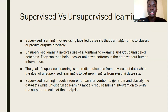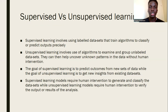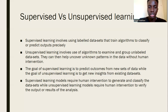Unsupervised learning, on the other hand, involves the machine teaching itself — uncovering patterns and relationships between the data sets it has been given. Once it has learned, it can make predictions and forecasts, but it's used mostly for uncovering unknown patterns or relationships between data. The goal of supervised learning is to predict outcomes, while the goal of unsupervised learning is to get new insights from existing data sets.